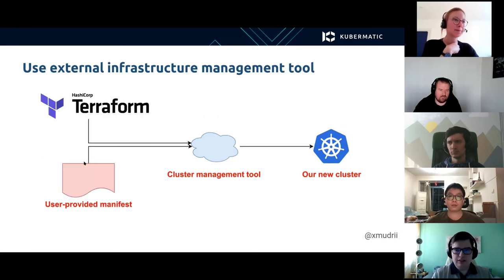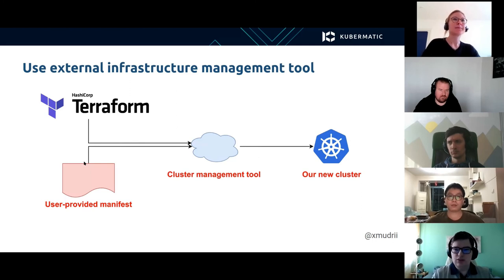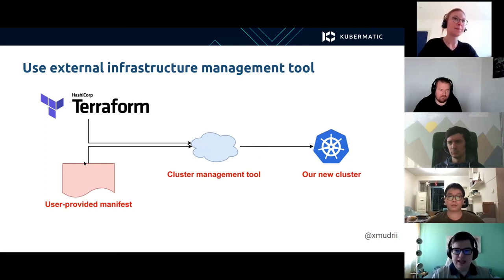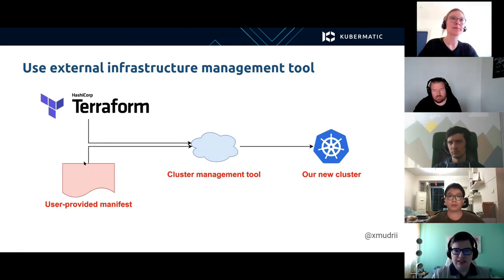To solve this problem, we can use an external infrastructure management tool such as Terraform. We'll use it to create the infrastructure and provision instances, and then provide the information about those instances and how to access them to our tool. The user-provided manifest will only contain information about the desired Kubernetes cluster, and the tool can use SSH to access instances and install Kubernetes there.